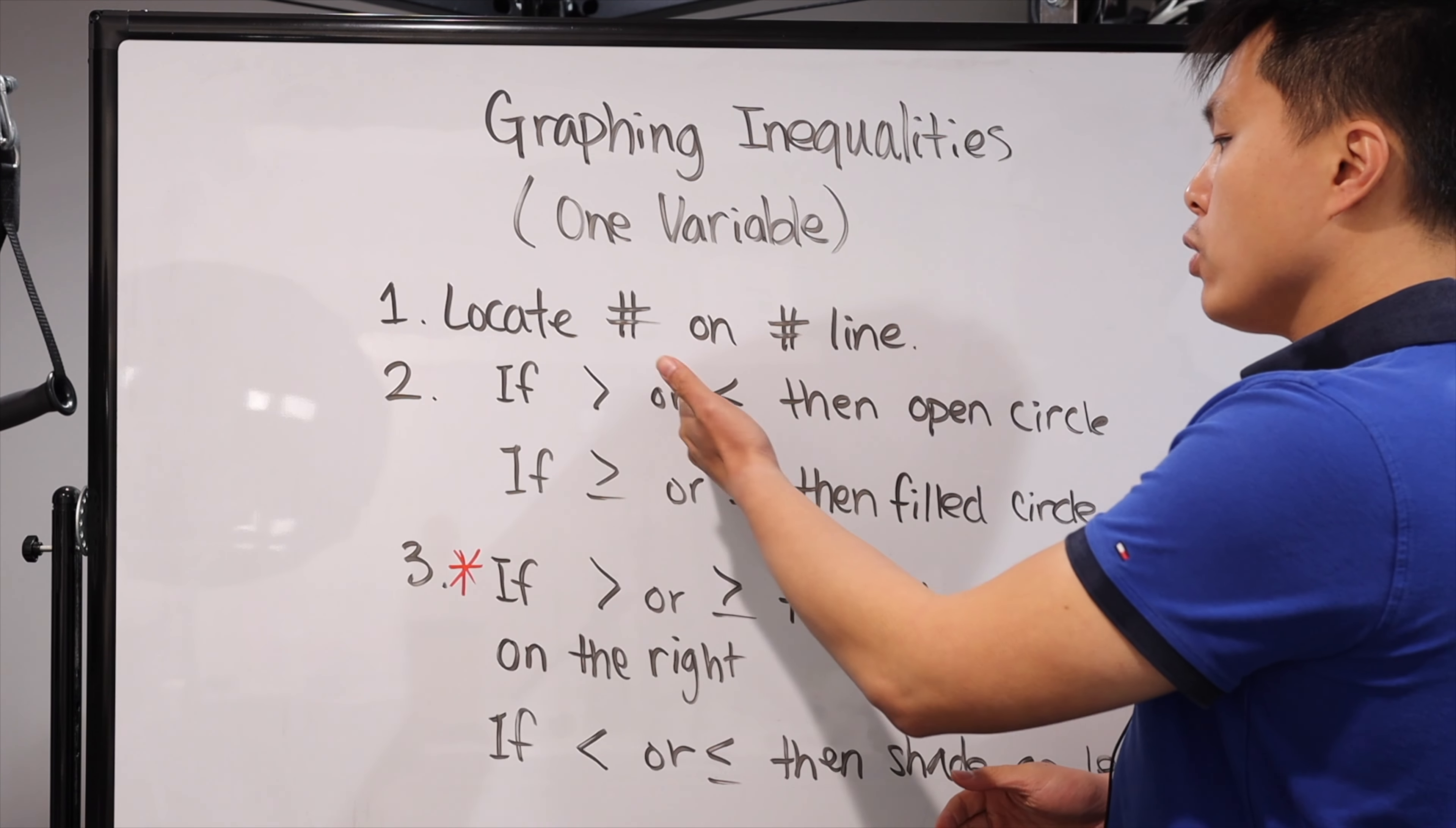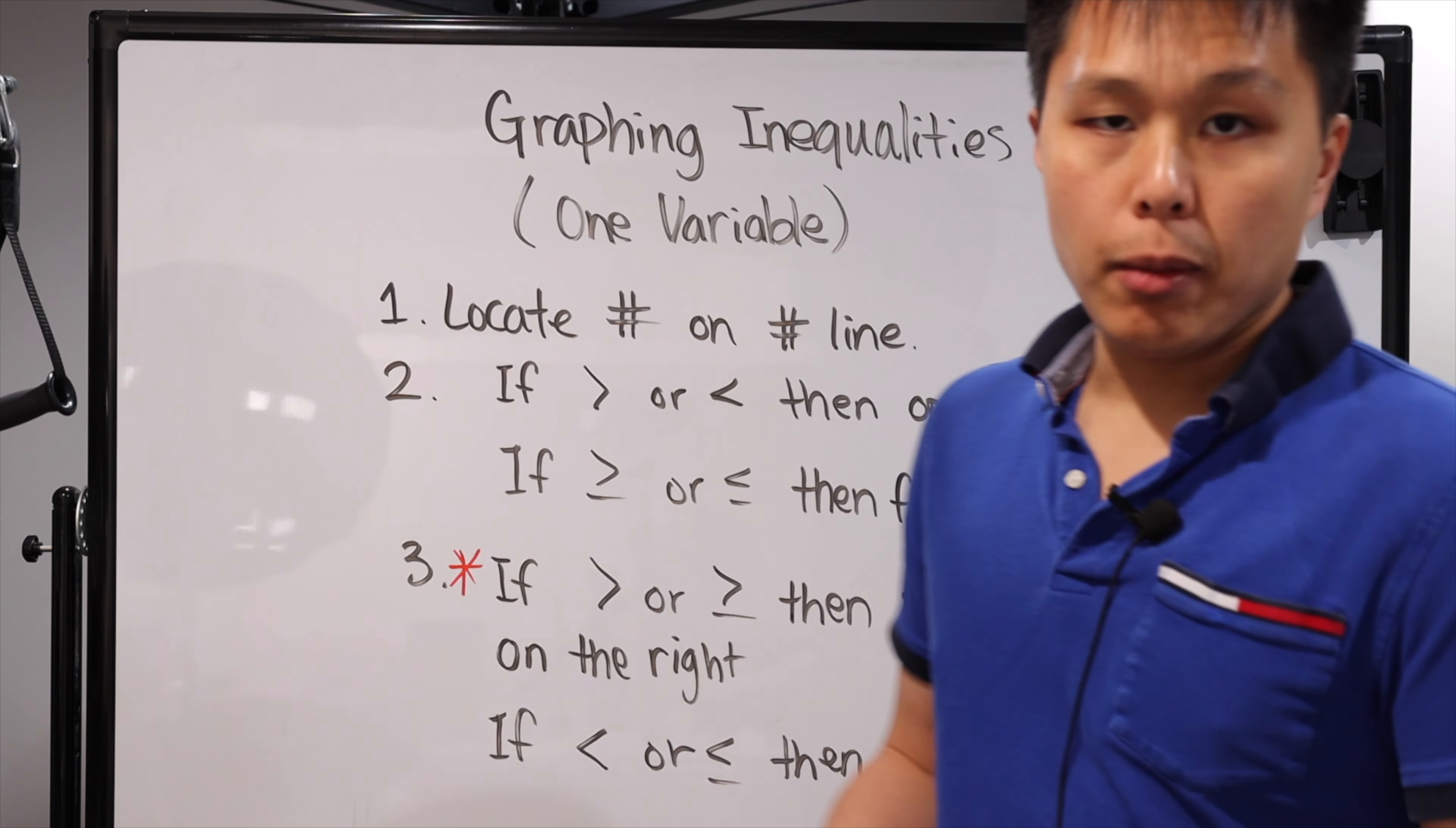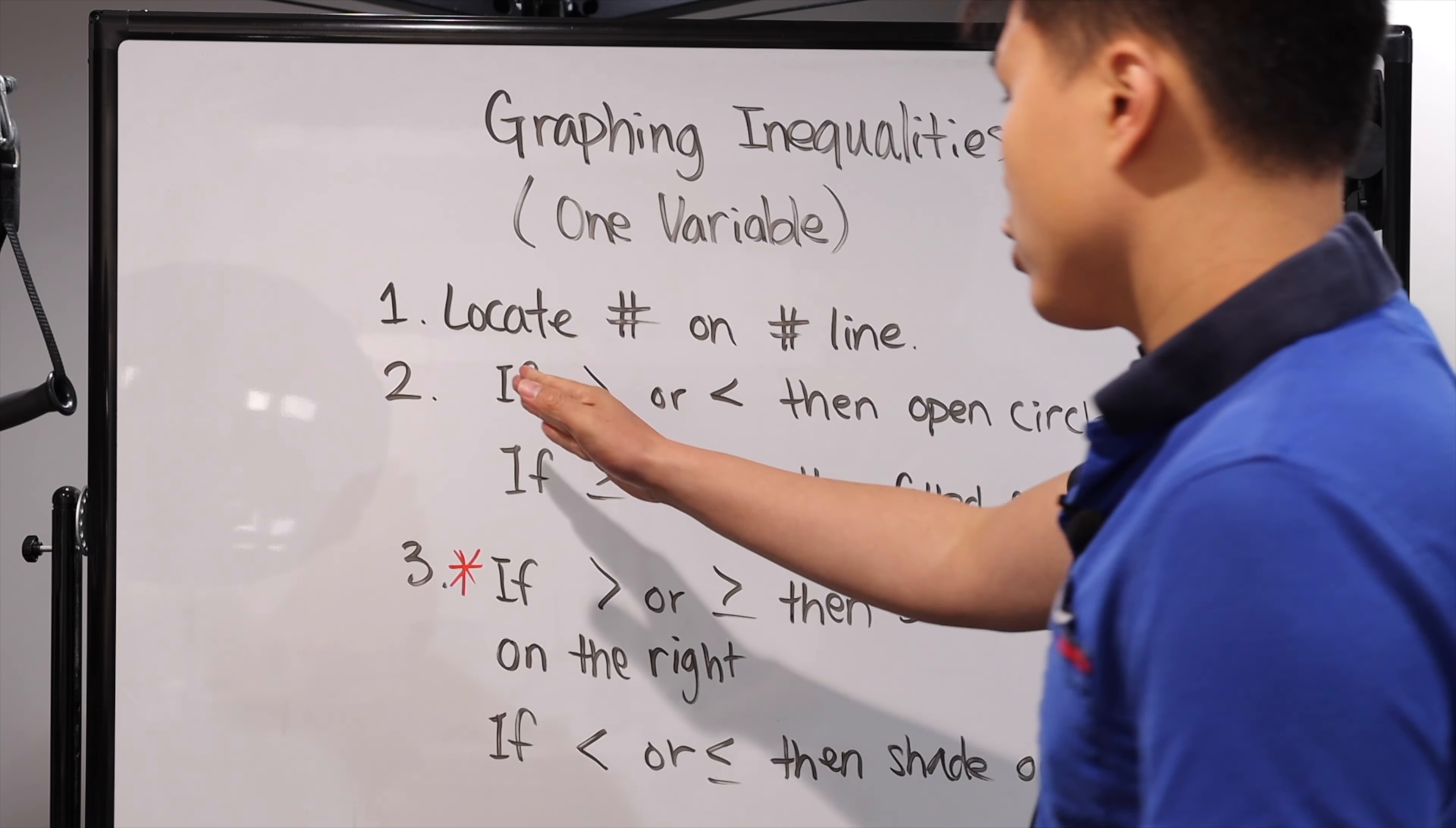All right, so if it is a greater or less than symbol, there's no or equal in it, then it's gonna be an open circle. And I'm gonna show you that with an example in a bit. If it is a greater than or equal, or less than or equal, then you're gonna fill the circle in. It's gonna be a solid filled in circle. That's for step two.